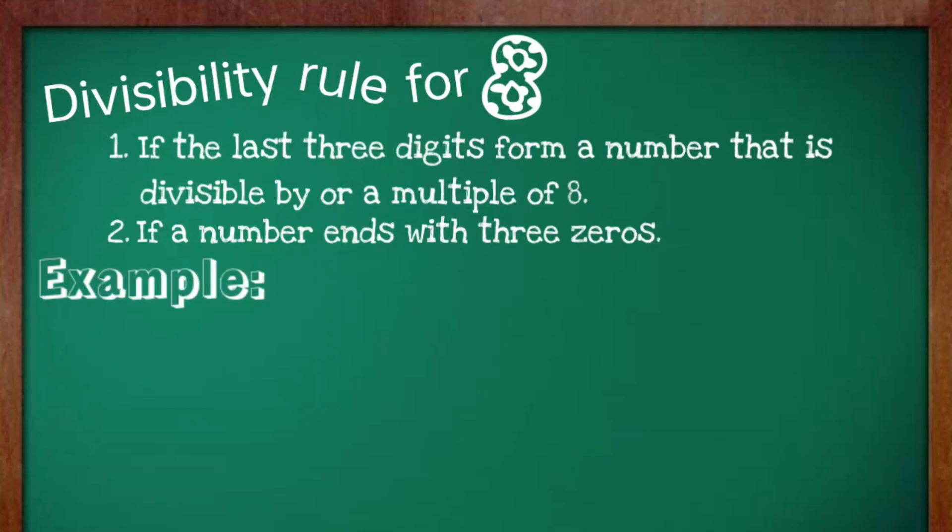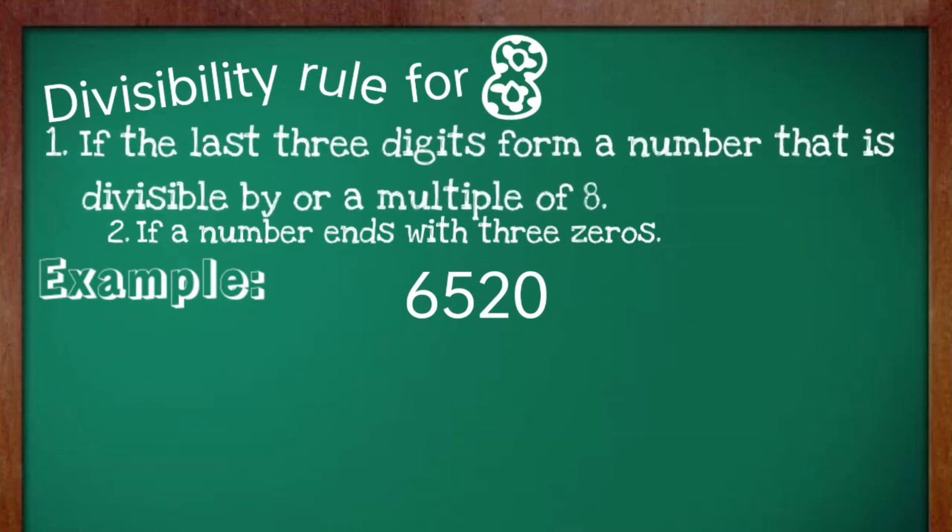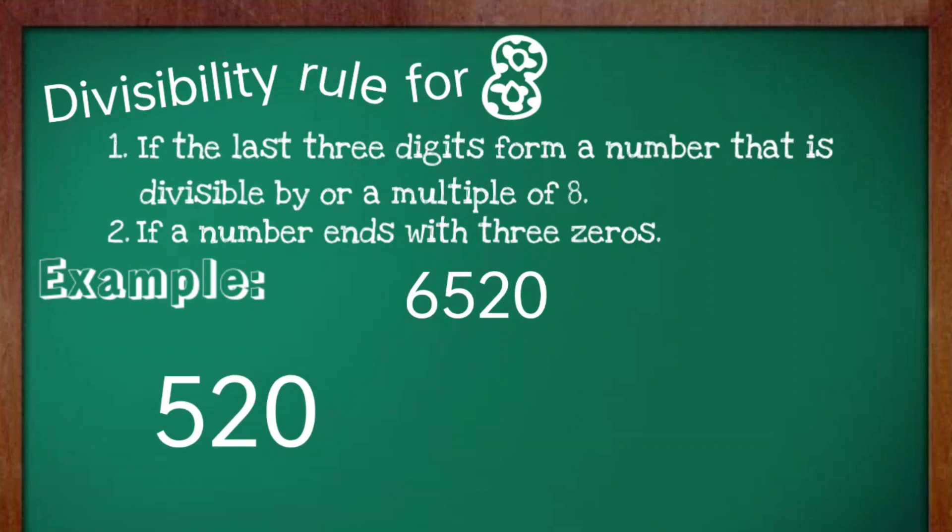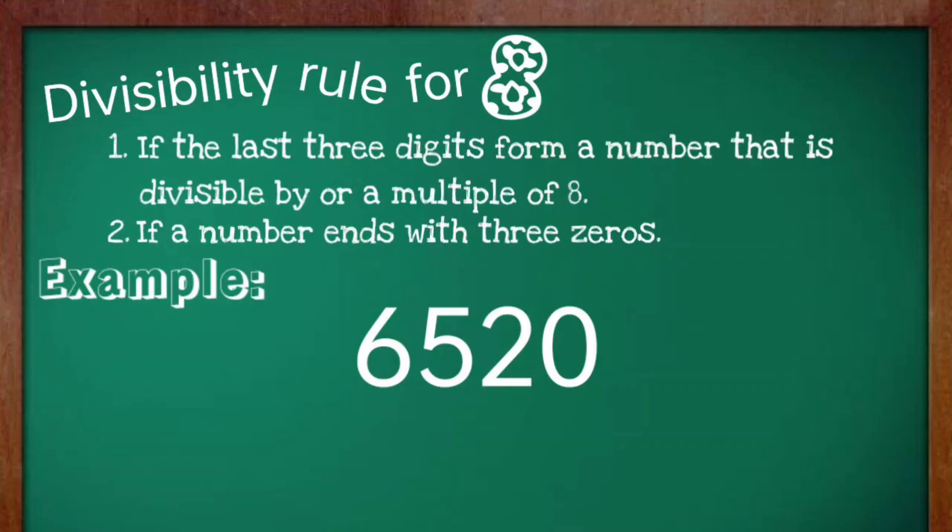Let's try these examples. We have 6,520. Now, let's apply the first rule. Take the last three digits and divide it by 8. 520 divided by 8 is equal to 65, making 6,520 divisible by 8.